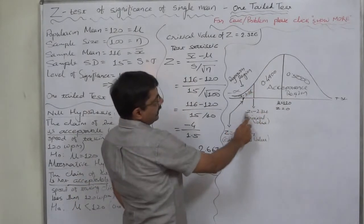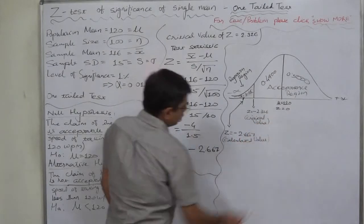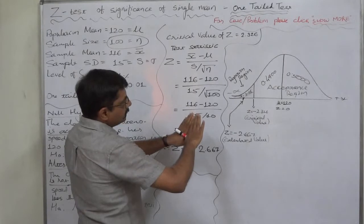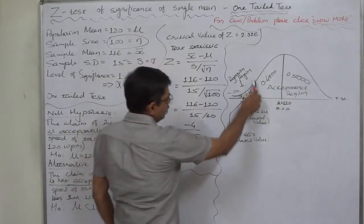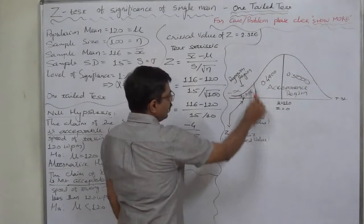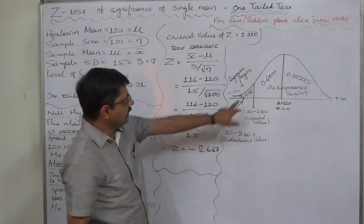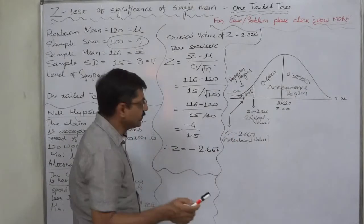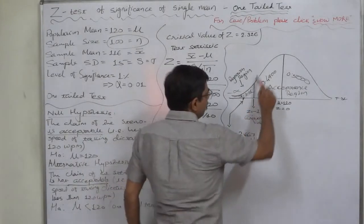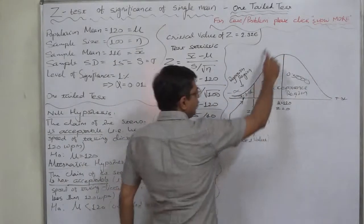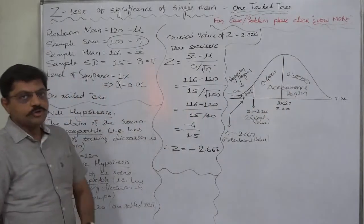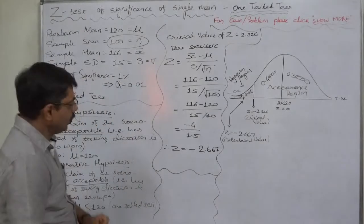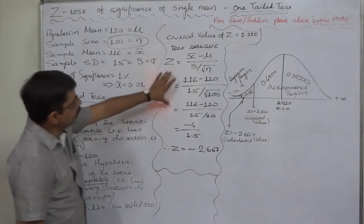Now the entire graph has been divided into two parts. One, this much is rejection region. If the calculated value of z falls in this region, we should reject her claim. But on the other hand, if the calculated value of z falls in this region, her claim should not be rejected, that means her claim should be accepted.